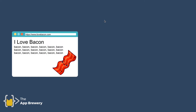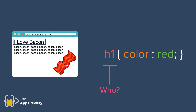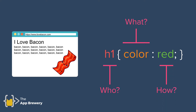If I apply CSS to this website — say, changing the H1's color to red — the 'who' is the H1 (that's the selector), 'color' is the 'what' (the property), and 'red' is the 'how' (the value). By applying this CSS rule, I end up changing the H1's color property to red.